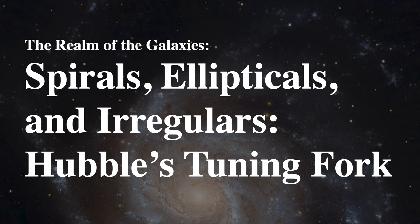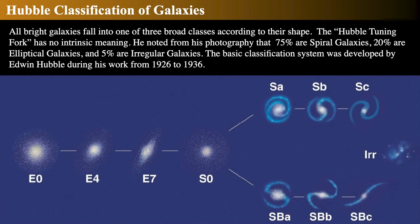Once Edwin Hubble started doing a major photographic survey, he showed us that the cosmos is filled with these extraordinarily large distant objects. Hubble, during his work from 1926 to 1936, once he started really going to town with that 100-inch telescope at Mount Palomar, he took numerous photographs of the night sky, made amazing discoveries, and found that the bright galaxies in the sky fall into three broad classes according to shape. He simply took photographic visual surveys of them and determined their classes according to shape.